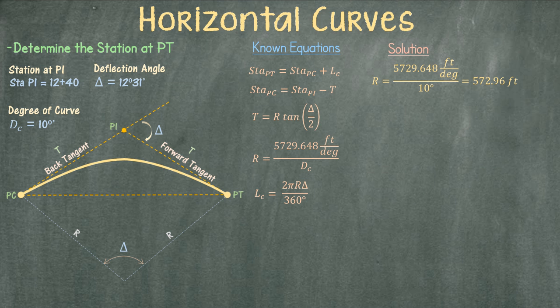Next I will be able to determine the tangent. I know all the variables needed. I substitute all the variables with the corresponding values and determine that the tangent is 62.75 feet. Next I will determine the station at PC by subtracting the tangent from station PI.